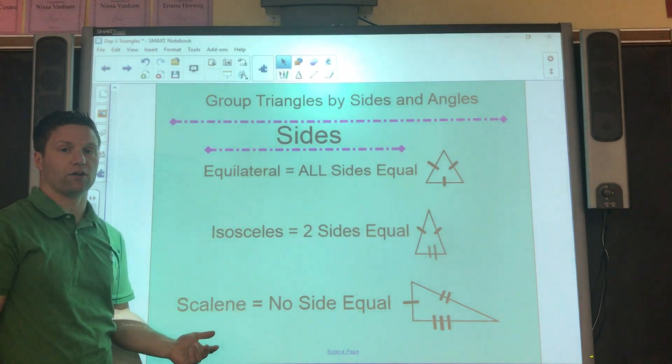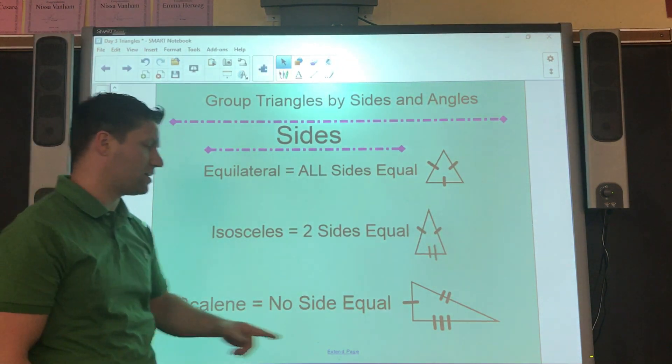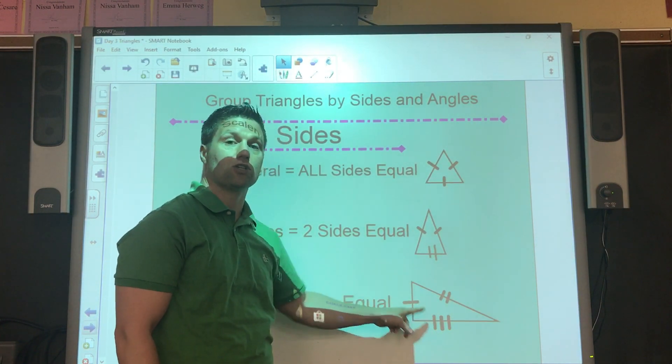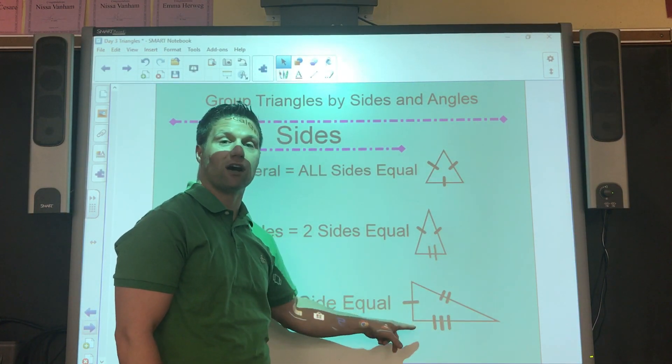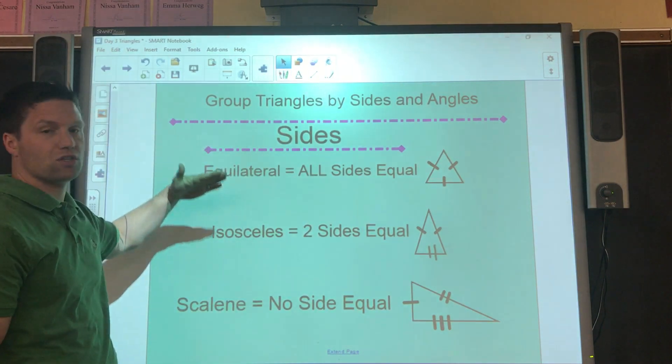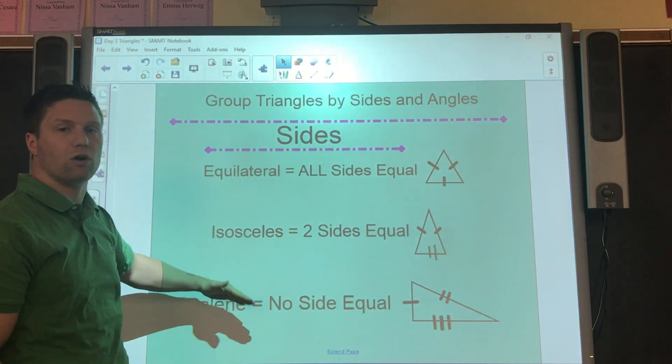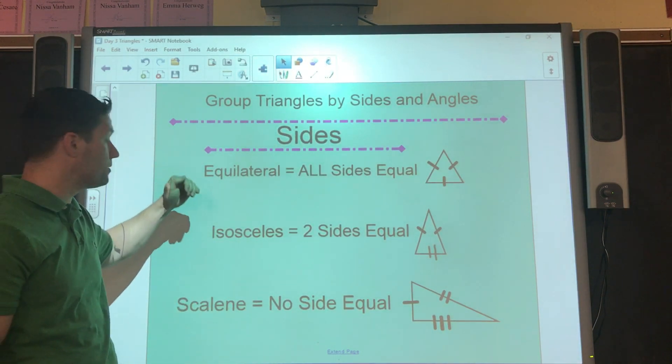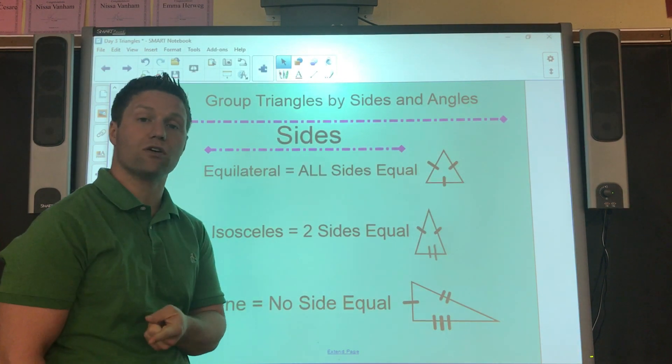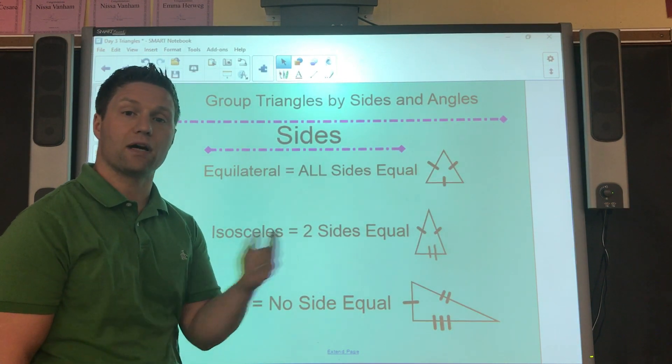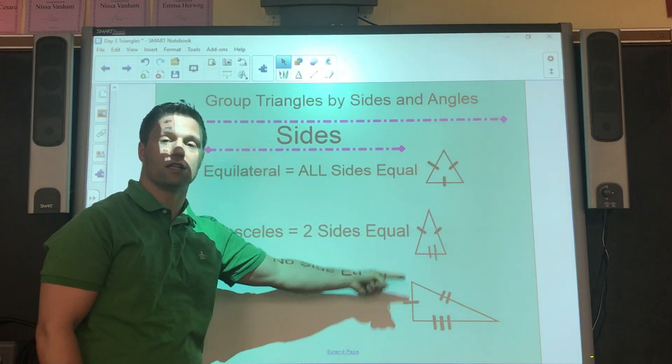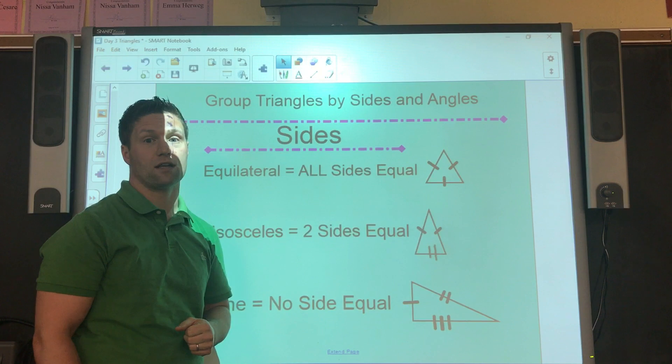And then we have the one scalene, where no sides of the triangle are the same. And notice what they did here. They did one, and then they did two marks, and then they did three marks, showing that all three are of different lengths. So we have all of them are the same. We have just two of them the same, and then no sides are the same, and that's equilateral, and isosceles, and scalene. Make sure you have that down in your notes. Pause the video if I was going too fast there. Even if it means pausing it and drawing these examples, that's probably a great idea.